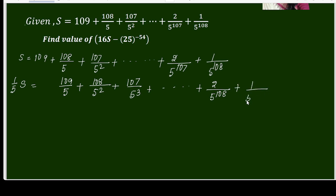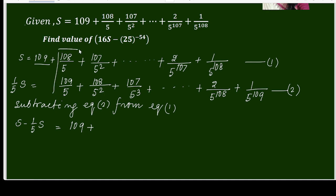Then I'll subtract equation 2 from equation 1. So S minus 1 by 5 times S equals: you can see 109 is a whole number, so let it be as is. Then we will subtract these terms, giving negative 1 over 5.